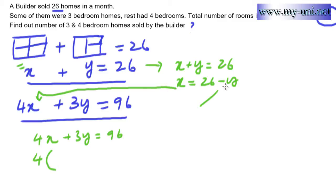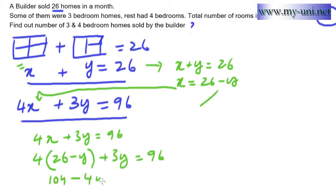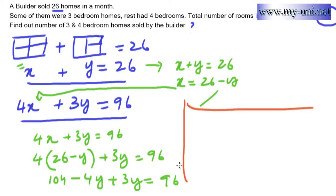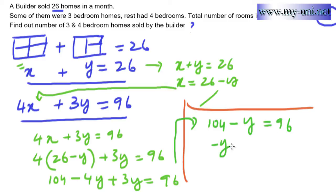Substituting into 4x plus 3y equals 96, we get 4 times (26 minus y) plus 3y equals 96. Opening the bracket: 4 times 26 is 104, giving us 104 minus 4y plus 3y equals 96. Combining the y terms, minus 4y plus 3y gives minus y, so 104 minus y equals 96.